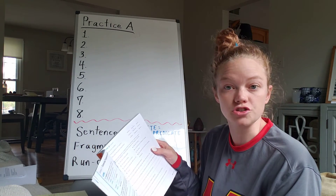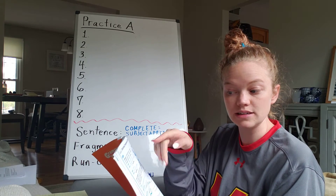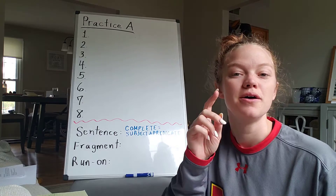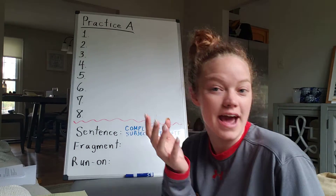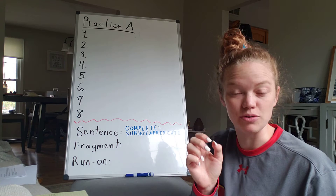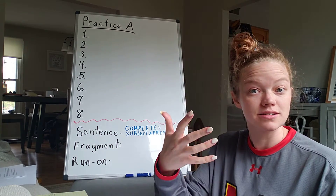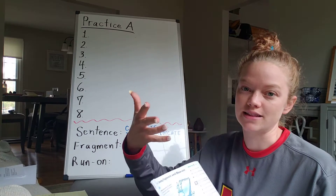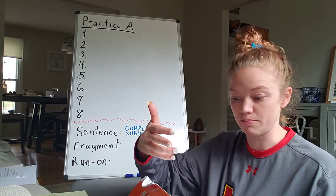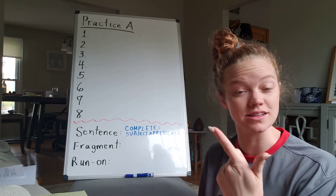Fragment: bought a children's book. To correct it, to make it a sentence, we'd have to add a subject because bought a children's book is an action. What is the action word there? The simple predicate out of that complete predicate would be bought, the action word. Who bought the children's book? We have to add in that subject to make sure it's complete. My sister bought a children's book. Now I have who the sentence is about and what it is that they do.